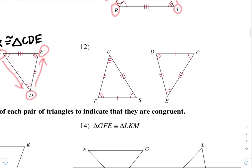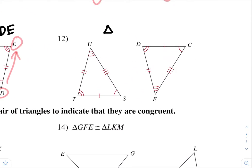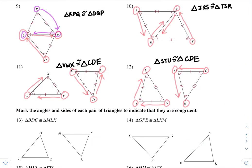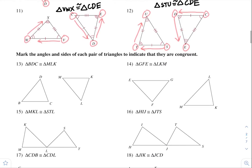Number twelve. Just saying a random triangle: triangle STU. So triangle S to T to U — what triangle is that congruent to? S has one arc, which is this one. To T, which is the two arcs. And to the three arcs. So for me, that's triangle CDE. It's just you guys getting used to seeing a pattern and making sure that they correspond to the appropriate angles and sides.